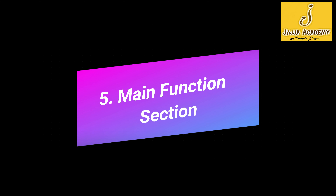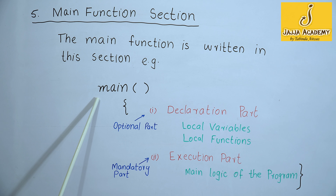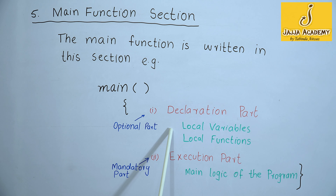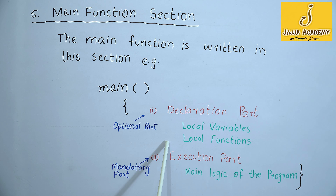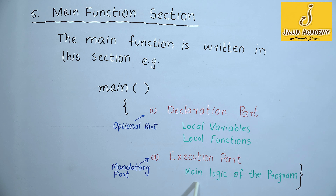The fifth section is the main function section. Every C or C++ program must have exactly one main function. The body of the main function is written inside curly braces. The main function has two parts: the declaration part and the execution part. The declaration part is where all local variables and local functions are declared, and it is an optional part. The execution part is where the main logic of the program is implemented and is a mandatory part — one cannot skip the execution part.